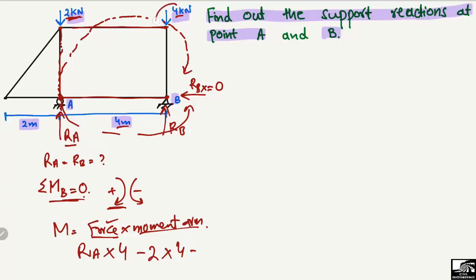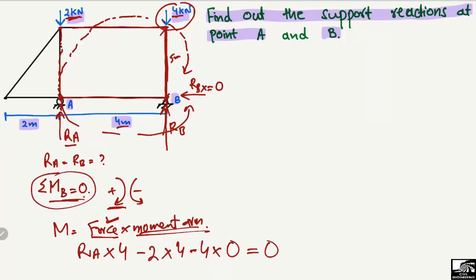The 4 kN load is acting directly on top of support B. There is no perpendicular distance from this load to point B — only a parallel (vertical) distance. For a moment calculation we always need the perpendicular distance, but here the load acts in the parallel direction, so its moment arm is zero and its contribution is zero.